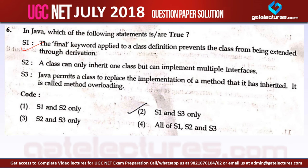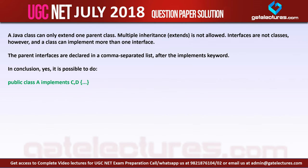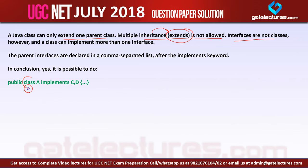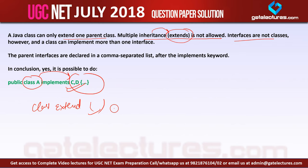Now let us look at the explanation for statement number 2, which is about inheritance. A Java class can only extend one parent class — multiple inheritance is not allowed. For inheritance we use the extends keyword, and that is not allowed with more than one class. But interfaces are not classes; however, a class can implement more than one interface. So if we have a class A, it can implement more than one interface, but class A can only extend one class.